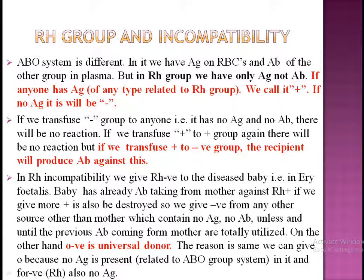Whenever we transfuse blood from one person to another, we first determine the blood groups of both and then do cross-matching. Regarding blood groups, we determine the ABO system and also the RH group — it is as important as the ABO group. After cross-matching, we transfuse blood from donor to recipient.